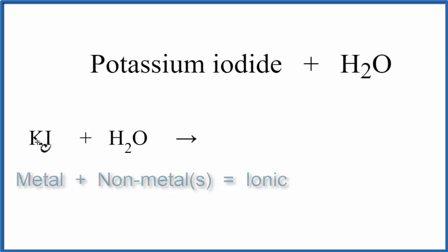So we have K, which is in group 1 on the periodic table. That means it has a 1 plus charge. And then iodine's in group 17, sometimes called 7A.